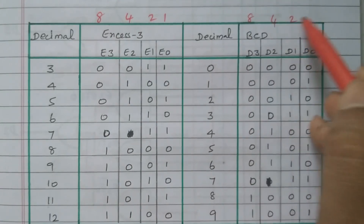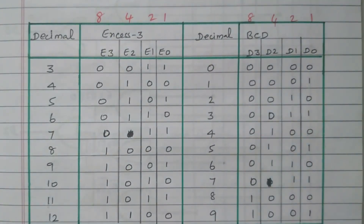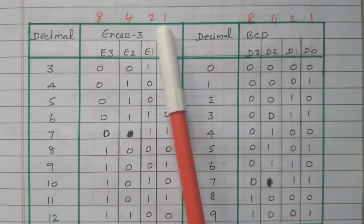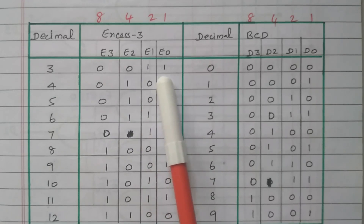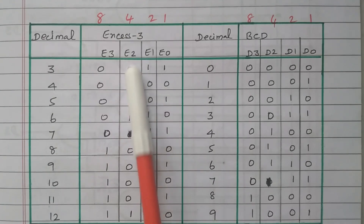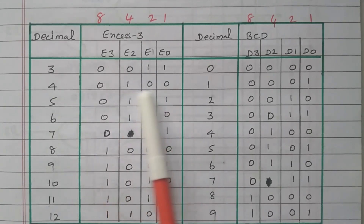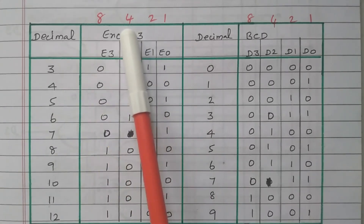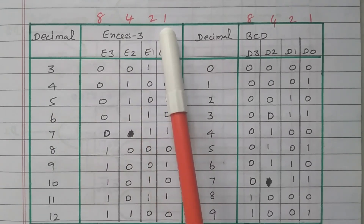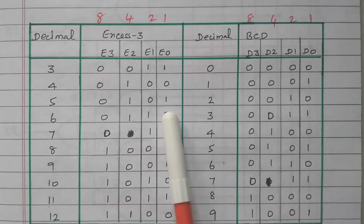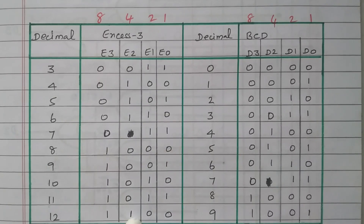The XS3 input also uses 8, 4, 2, 1 weightage. So how do you represent 3? The third and fourth bits (2 plus 1) give 3, so bits are 0011. For 4, only the second bit is set — 0100. For 5, the second and fourth bits are set (4 plus 1), giving 0101. These are assigned accordingly.